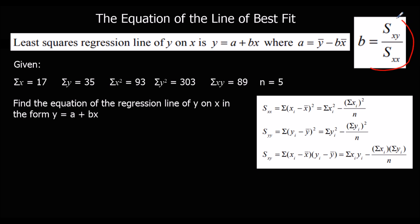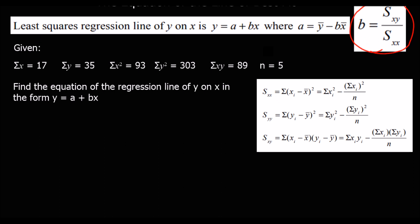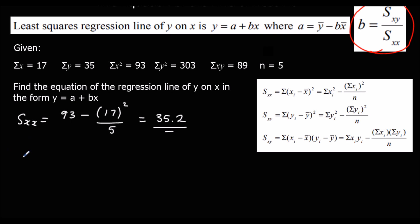We work out b first, which is Sxy over Sxx. Sxx is the sum of the x squareds (93) minus the sum of the x's (17) squared over n which is 5 — giving 35.2. Sxy is the sum of the xy's (89) minus the sum of the x's times the sum of the y's (17 times 35) over n which is 5 — giving negative 30.